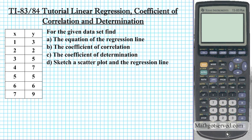Good day, students. I'm going to be going over how to use a TI-84 or 83 calculator to accomplish the following goals: to find the equation of the regression line, the coefficient of correlation, the coefficient of determination, and to sketch the scatter plot of this data and the regression line on the same coordinate system. So this is the data set we're going to be referring to. First, we need to enter this list into the calculator in order to generate the equation of the regression line.